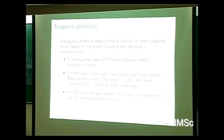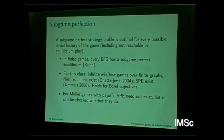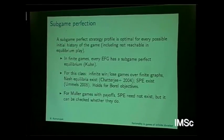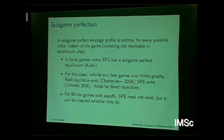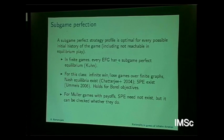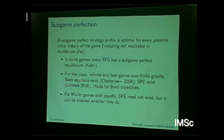A subgame perfect strategy profile is optimal for every possible initial history of the game, including those not reachable in equilibrium play. This was called behavioral strategies. Kuhn developed an extensive theory of it, and there is a great theorem of Kuhn showing that every finite extensive form game has a subgame perfect equilibrium, including with mixed strategies.